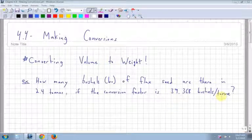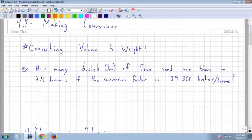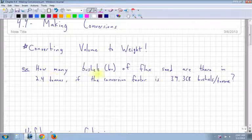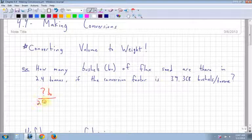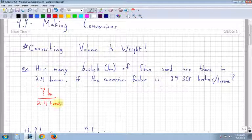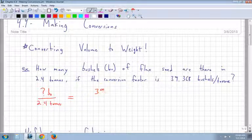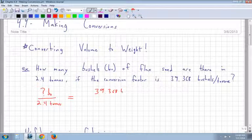Well, let's start off with what we're being asked and what we know. So I'm going to set up two ratios or two fractions. First of all, I say how many bushels of flax seed are there in 2.4 tons? So I'm going to say how many bushels are there per 2.4 tons? So I set up a fraction or a ratio. The conversion factor means that the ratio will be the same. So the conversion factor is 39.368 bushels per ton. So bushels are on top. So I'm actually going to keep 39.368 bushels per 1 ton.